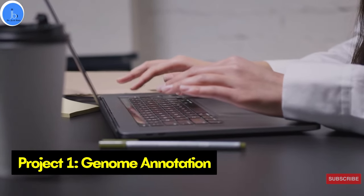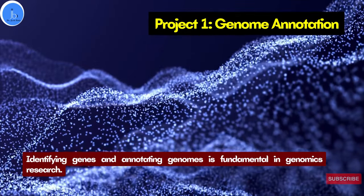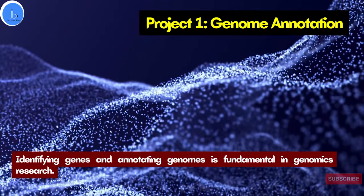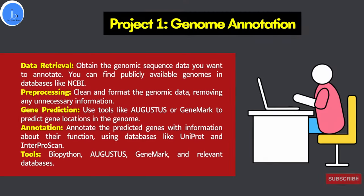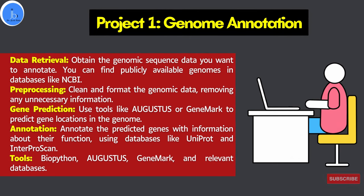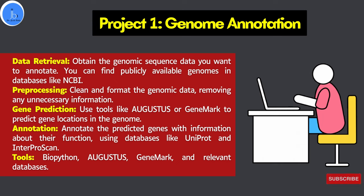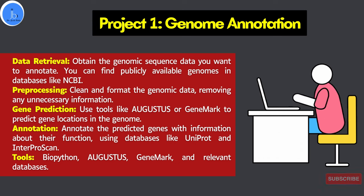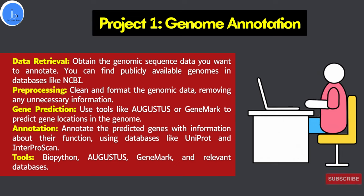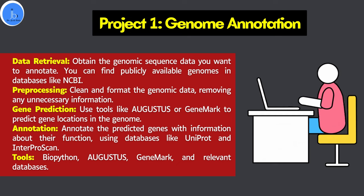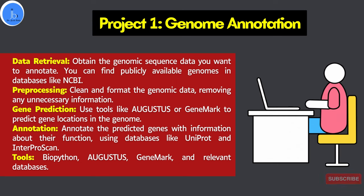Project one is genome annotation. This project involves identifying genes and annotation, which is fundamental in genomic research. First, obtain the genomic sequence data you want to annotate from publicly available databases like NCBI. Then preprocessing is required — clean and format the genomic data by removing unnecessary information. Next, use tools like Augustus or GeneMark to predict gene locations in the genome. Finally, annotate the predicted genes with information about their function using databases like UniProt or InterProScan. Required tools include BioPython for data analysis and manipulation, Augustus, GeneMark, NCBI, UniProt, and InterProScan.